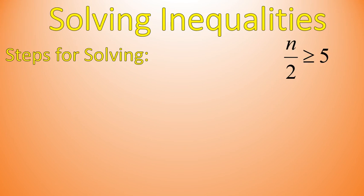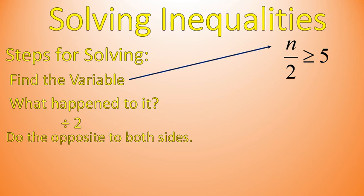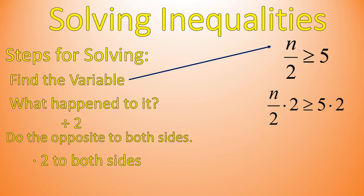Let's solve another one: n divided by 2 is greater than or equal to 5. I'm going to follow the same steps. Where's my variable? n. What happened to it? Divided by 2. What's the inverse of that? Multiplying times 2. Let's multiply both sides of this inequality times 2. n is greater than or equal to 10.